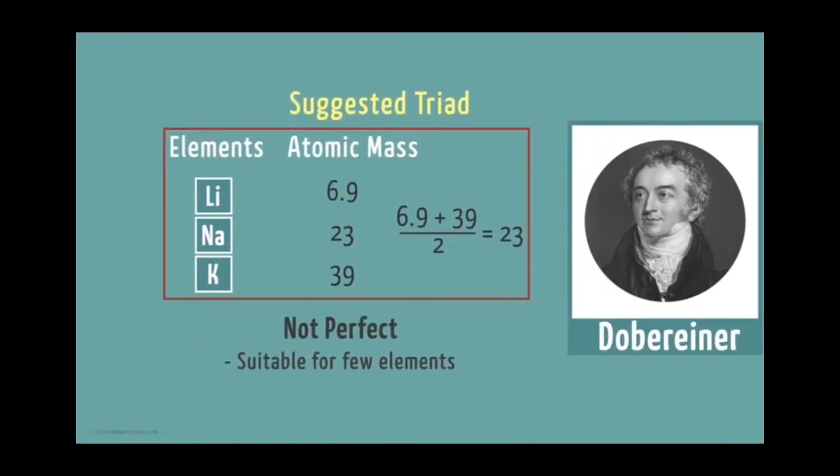However, it was not a perfect method of classification. Because all elements not follow this principle when arranged in triads. Also, when Dobereiner put forth the system, only few elements were known. With the discovery of new elements, the system of grouping elements was not perfect.